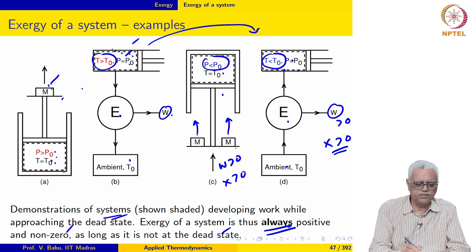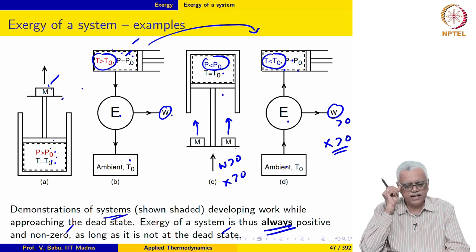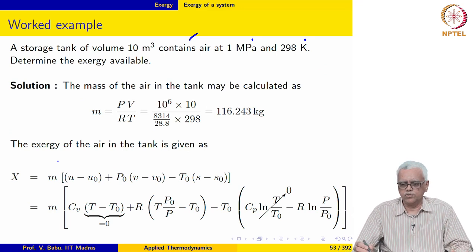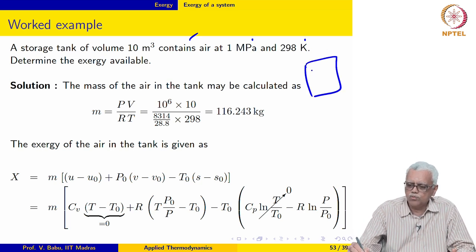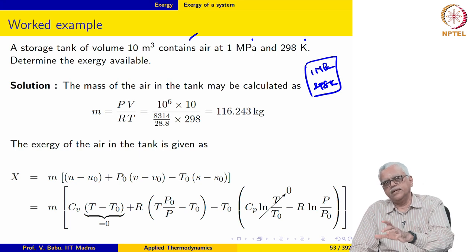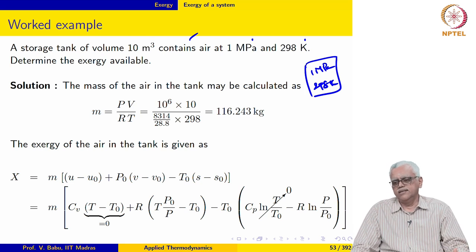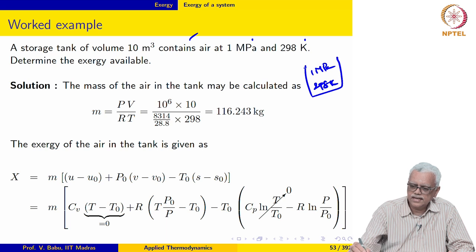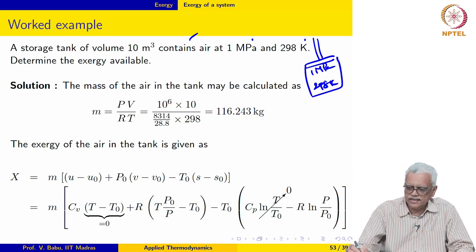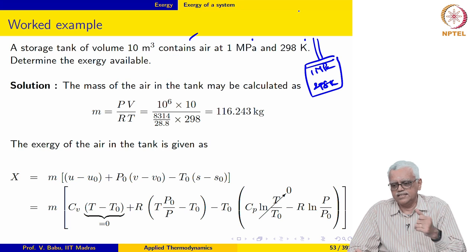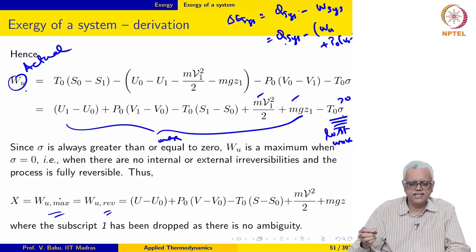We can think of this as a tank containing air at a pressure higher than ambient pressure and at the same temperature as the ambient temperature. The question is: determine the exergy available in this system — basically the maximum amount of work that can be generated as the system undergoes a process from this state to the dead state. We would open up one side of the tank, attach a piston, and as the air expands to ambient pressure the piston moves and can be used to lift a weight.